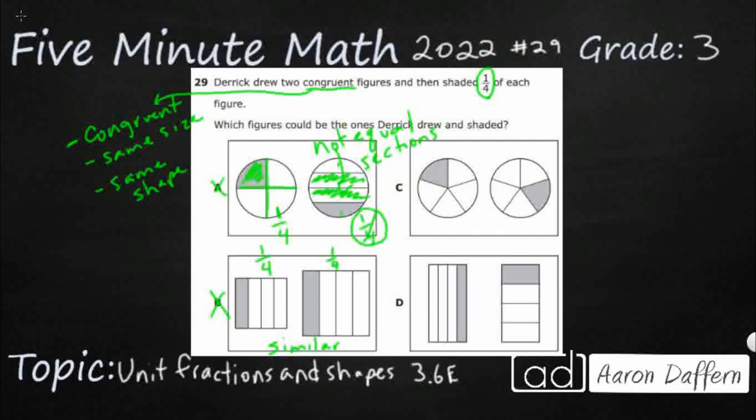Alright, so let's check C. Well, C looks like they are fractions, but take a look at this. I've got one, two, three, four, five. I've got five sections. That's one-fifth for each of them. I think what they're expecting you to do is to count it wrong. Think that there's one shaded in section and four white sections. That's not how fractions work, though.